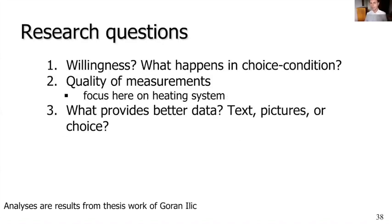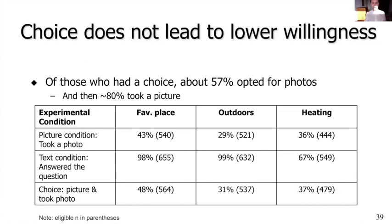We wanted to know the willingness — what happens when we do this — and we wanted to know the quality of the measurements: do we actually get better data if we ask people to take pictures rather than answer questions? The results show three dependent variables: taking a picture of the favorite place, the outdoor area or garden, and the heating system — shown in columns. With the three conditions as rows, we find that if we ask people to take a picture of their favorite place, 43% of respondents are willing to do so.